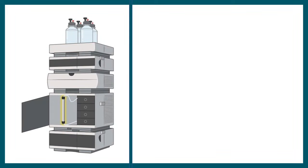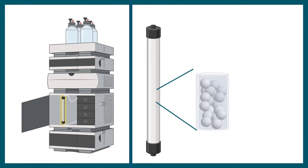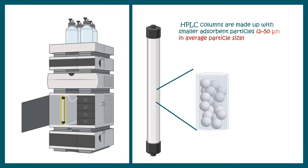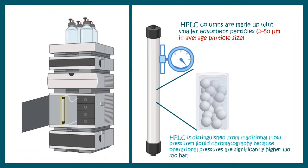HPLC has a similar operational paradigm, but the difference lies in the column. The column in HPLC is generally tightly packed, and the column materials are small in size. The particle size varies from 2 to 50 microns on average, and the pressure in HPLC can range from 50 to 350 bar, which is very high pressure.